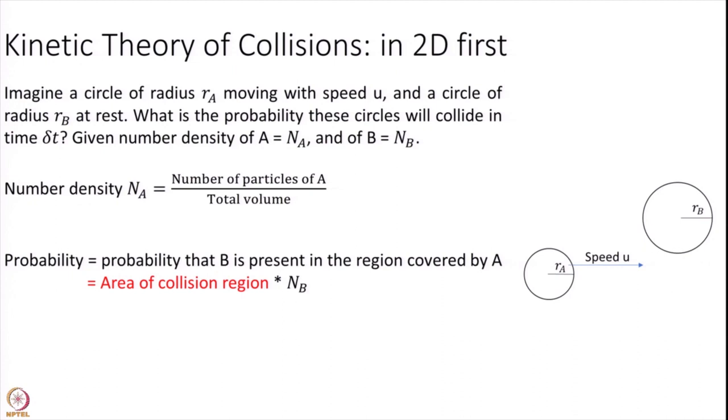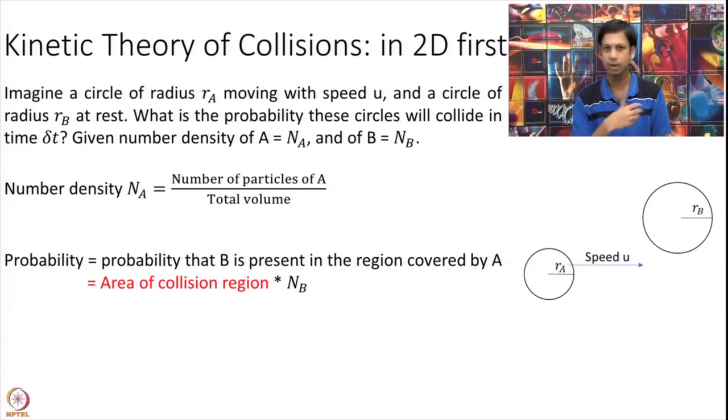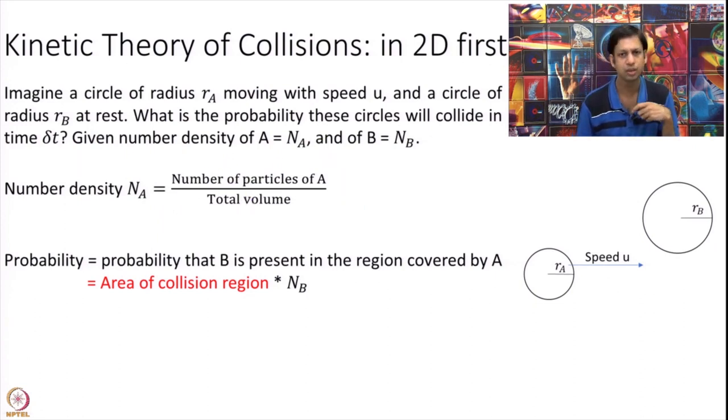Let us think how we are going to calculate this rate of collisions. To start thinking about it, this problem is of course in 3 dimensions, our world is 3 dimensional as we see it. To simplify, let us just think in 2D just for understanding. Let us start with a simple question. I want the rate of collisions, but let us ask a simpler question. Let us say I have a circle of radius rA. It is moving with some speed u and I have some other circle of radius rB which is at rest. What is the probability that these circles will collide with each other in some small time delta t? And let us assume a uniform density of A and B given by nA and nB where nA is the number density which is the number of particles of A divided by total volume.